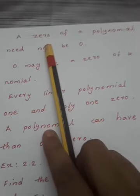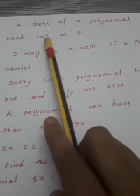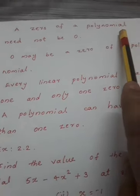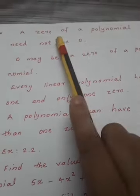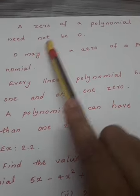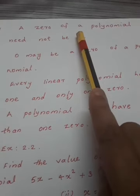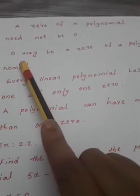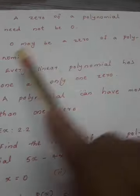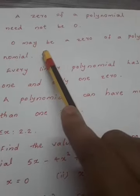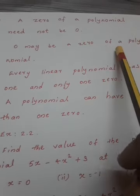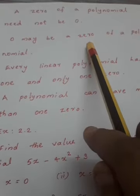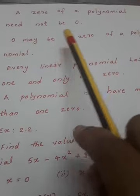Here are some conclusions about zeros of a polynomial. First point: a zero of a polynomial need not be zero. That is, the zero of a polynomial is the value of x that makes the polynomial equal zero — the zero of the polynomial itself need not be the number zero. Zero may be a zero of the polynomial sometimes, but it is not compulsory.